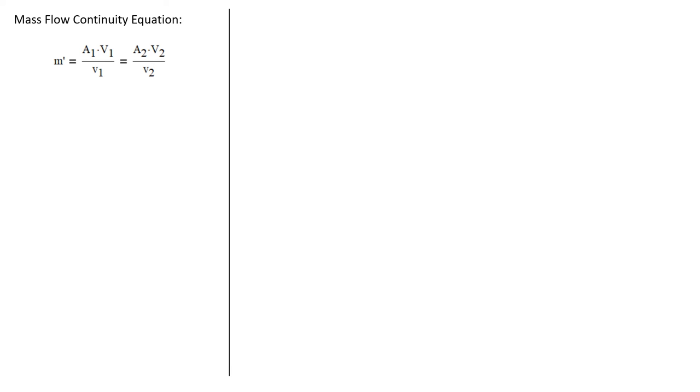So now we need to calculate the pressure. We'll start with the continuity equation. We know that the mass flow rate is just the area times the velocity divided by the specific volume. And that's true at state one as well as state two.